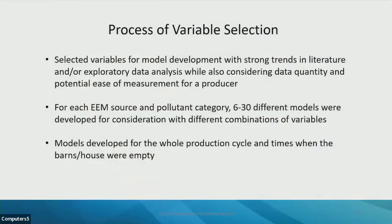After the exploratory data analysis and literature review, we would select variables to include in our models, also considering the quantity of data available and whether the variable could realistically be measured by a producer. For each EEM source and pollutant category, approximately six to thirty different models with different combinations of those variables were developed for consideration. These models were developed for the whole production cycle, including times when the barns or houses were empty.